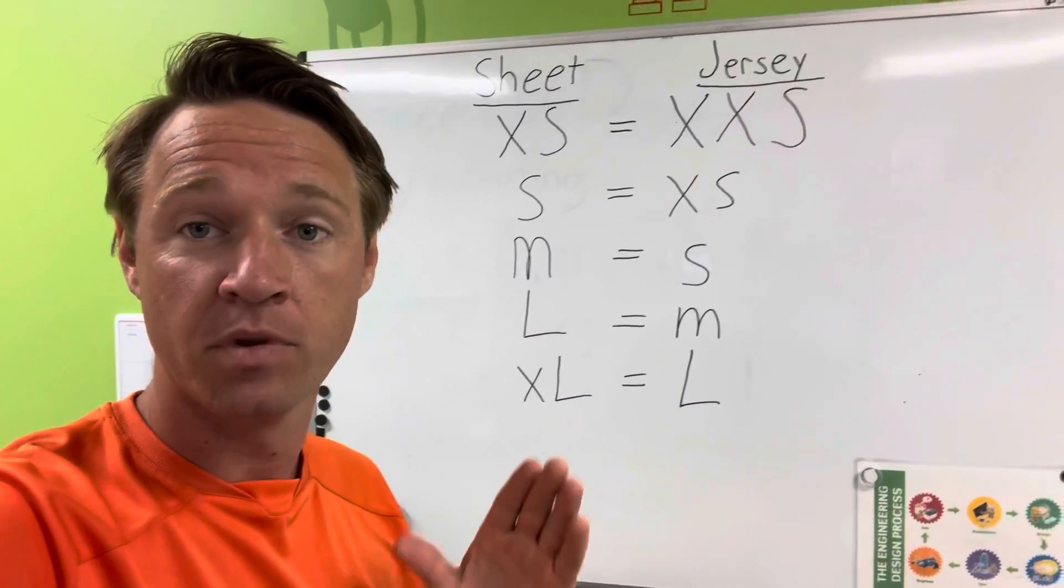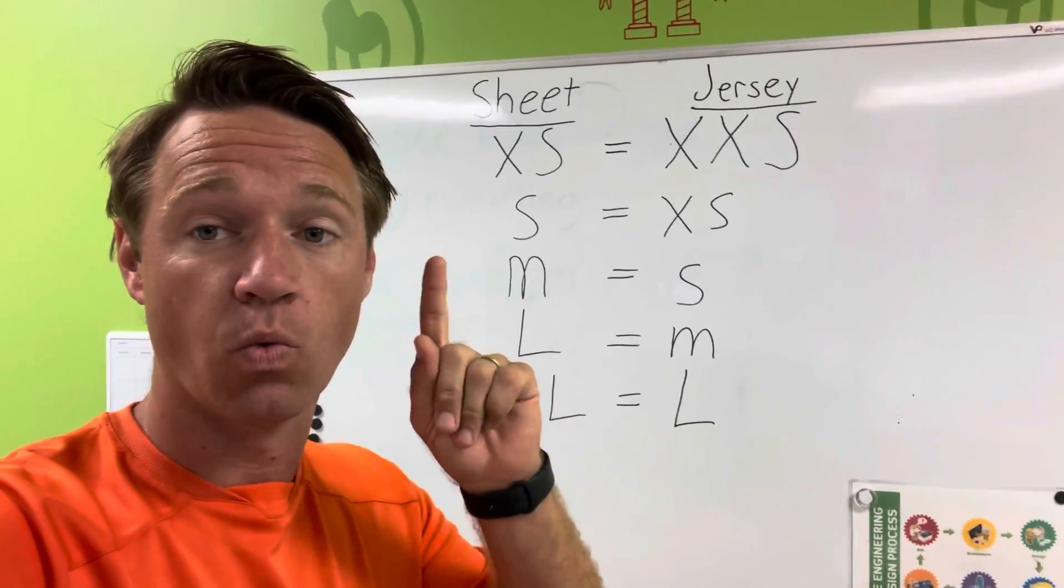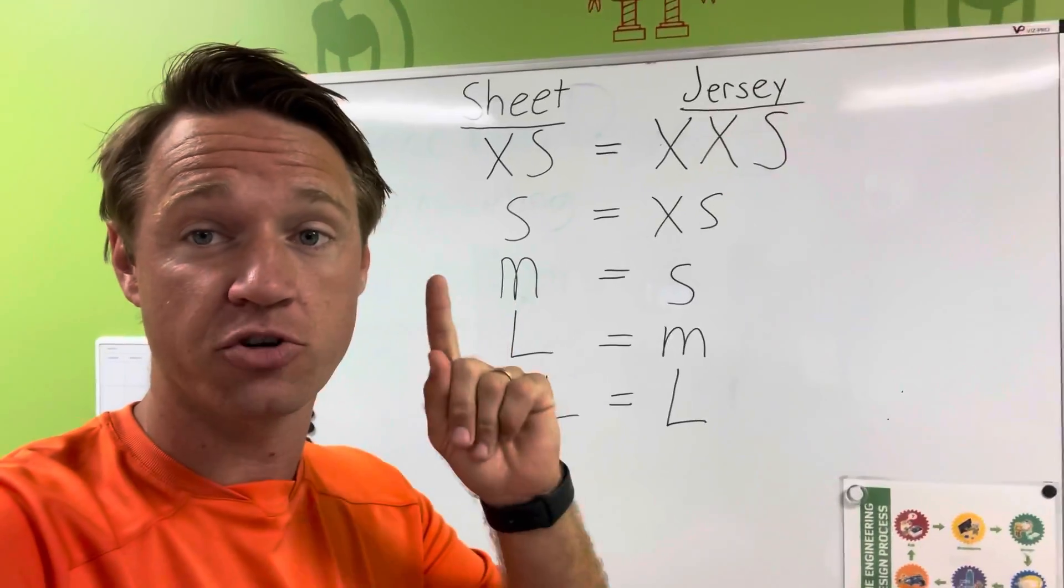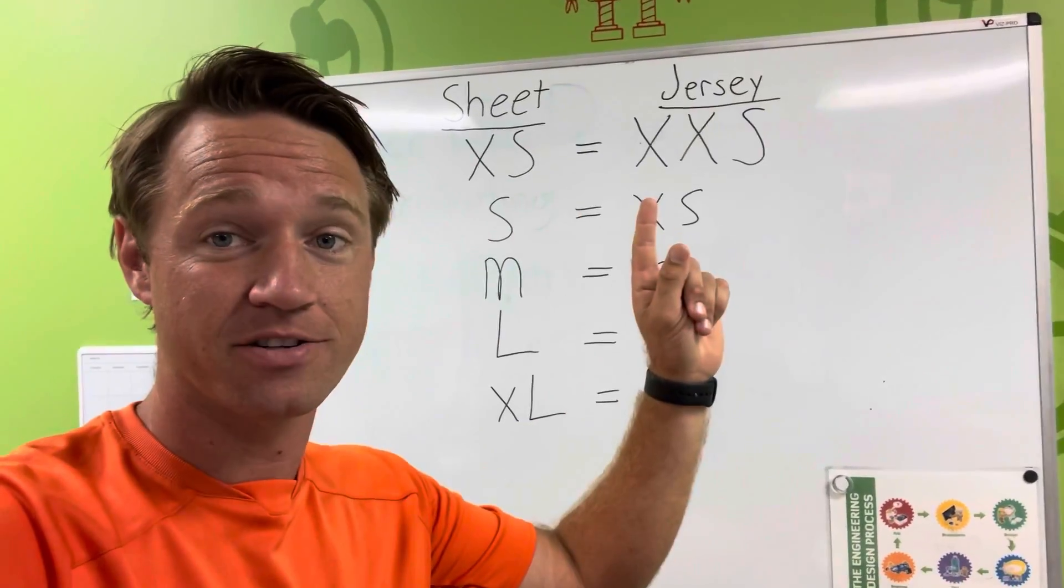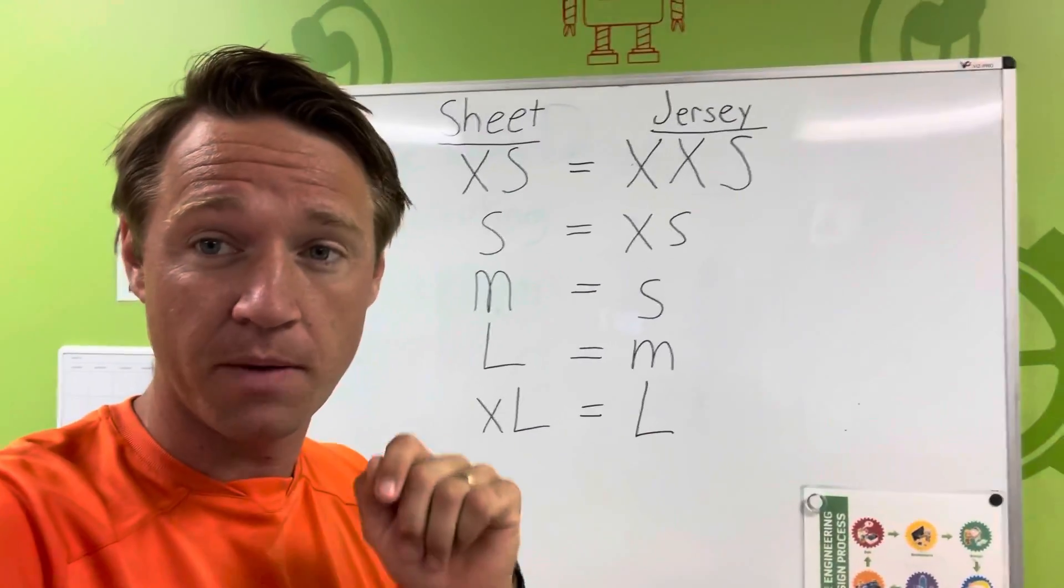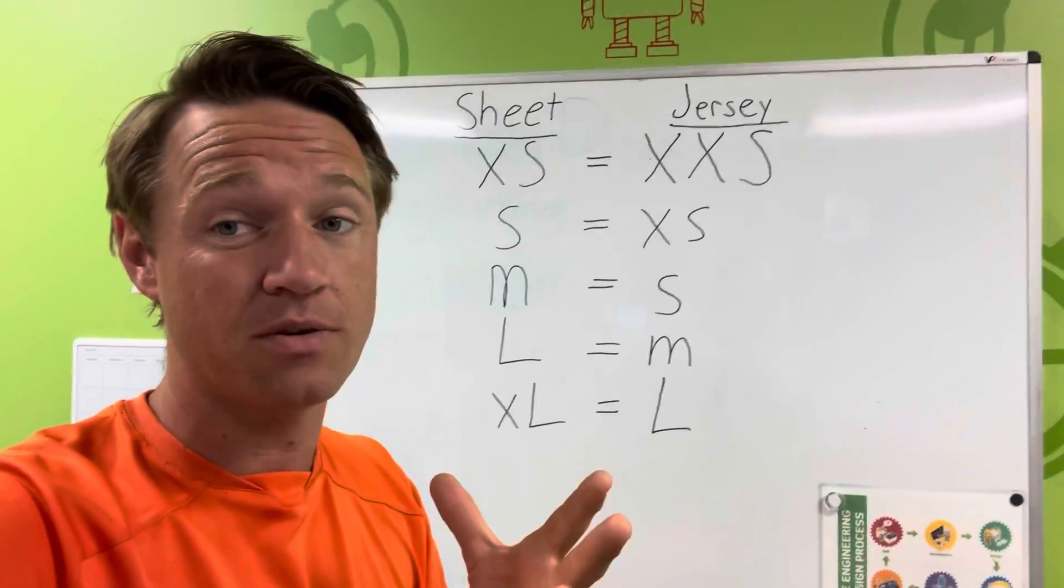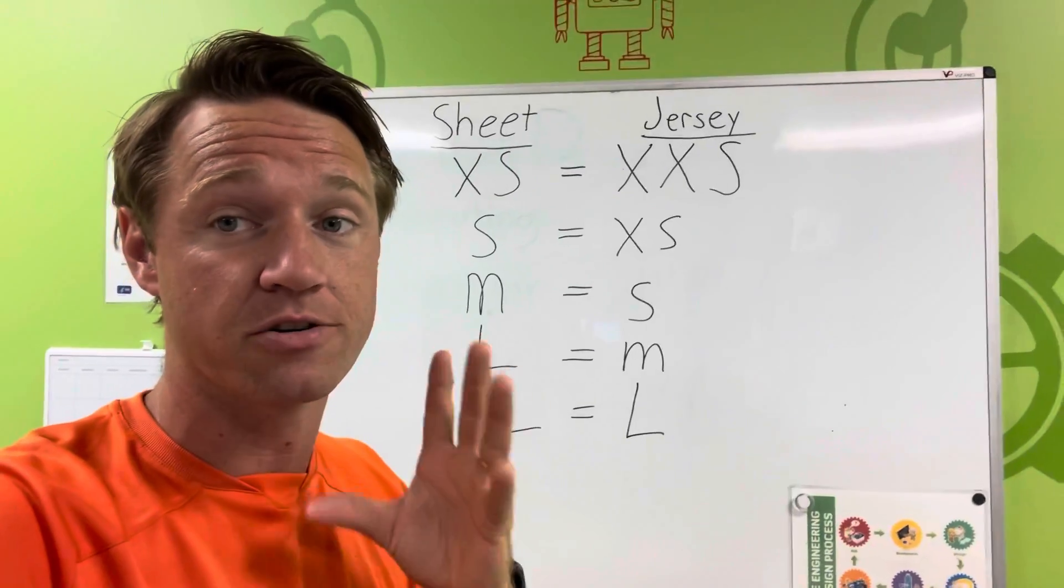Again, you downsize one size from your sheet. Extra smalls are extra extra smalls. Make sure you do that properly. If you forget to do that, it could be really bad and you'll run out of jerseys very quickly.